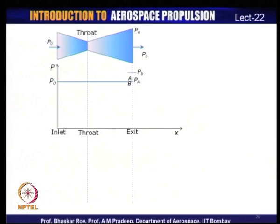Let us analyze a converging-diverging nozzle as we change the back pressure. This nozzle has a converging section, a throat where area is minimum, and a diverging section. P₀ is the reservoir pressure, Pₑ is exit pressure, and Pᵦ is back pressure.